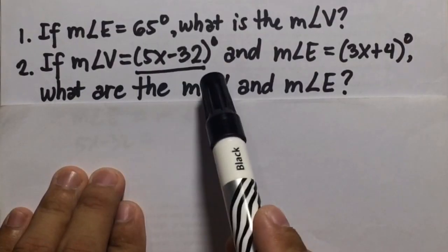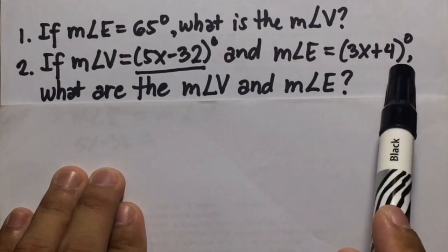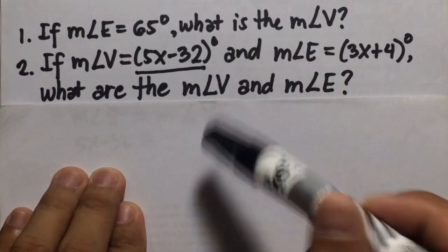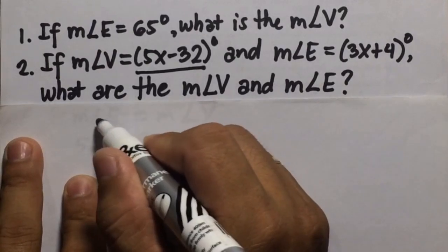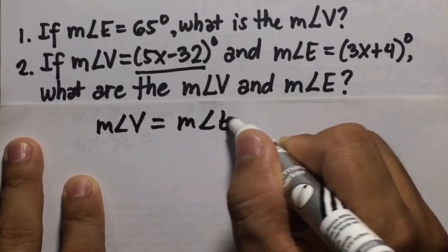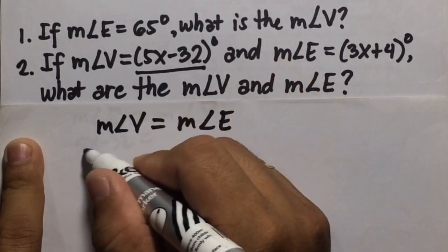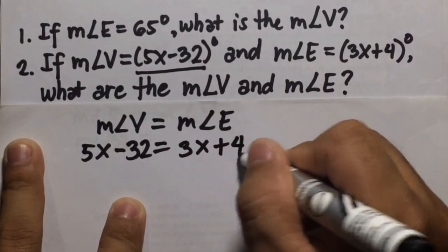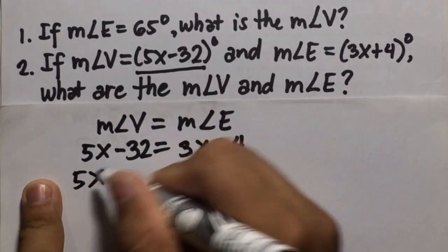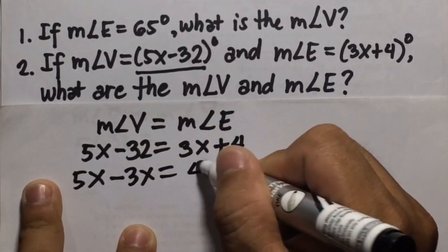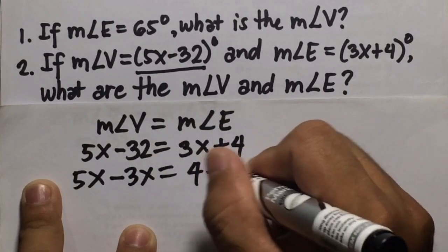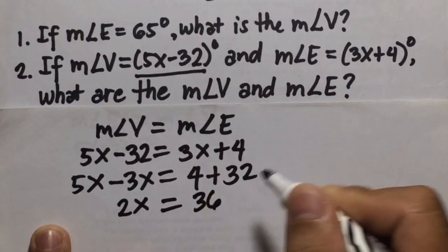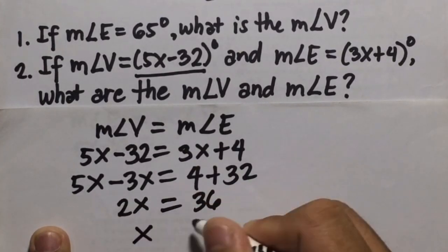Number two: if the measure of angle V is equal to 5x minus 32 degrees and measure of angle E is equal to 3x plus 4 degrees, what are the measures of angle V and angle E? Using the theorem, base angles are congruent, so measure of angle V equals measure of angle E. Substituting: 5x minus 32 equals 3x plus 4. Combining like terms: 5x minus 3x equals 4 plus 32, giving 2x equals 36. Dividing both sides by 2, x equals 18.